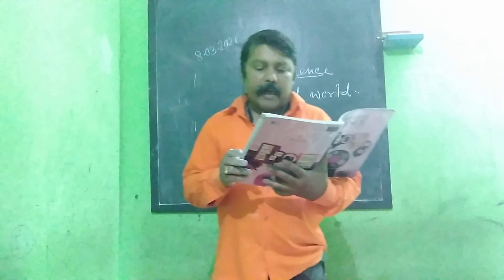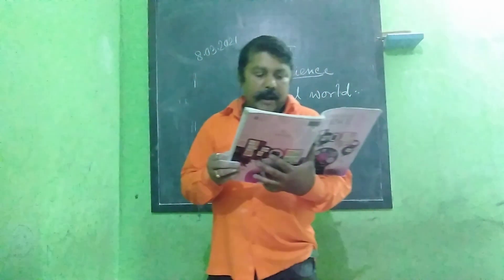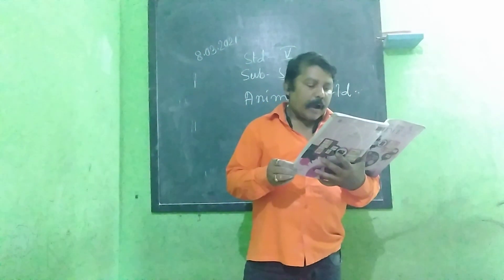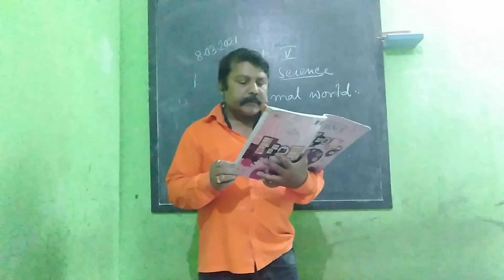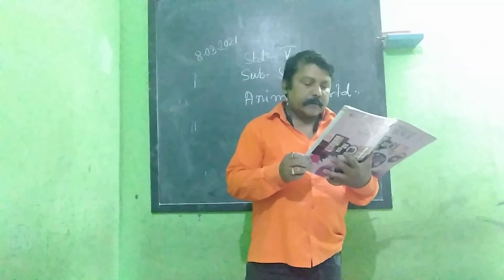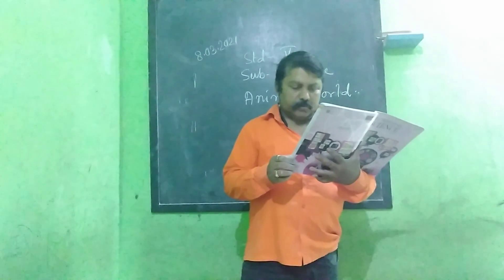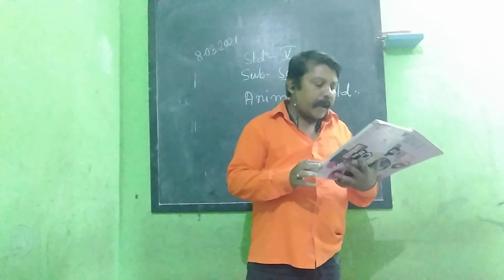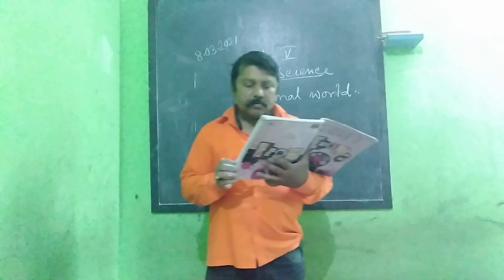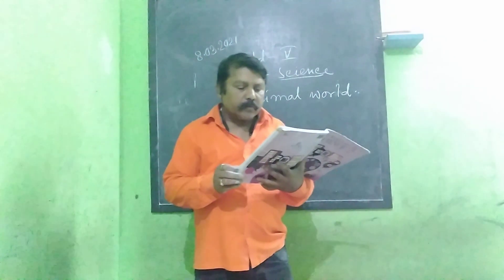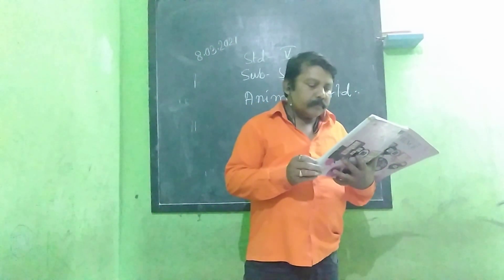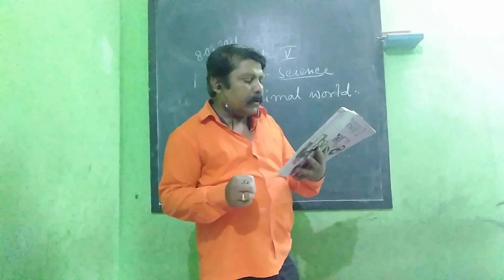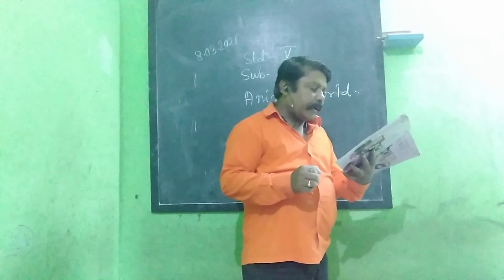Let us learn about the types of habitat. Animals live in the wild. Forests are areas with a lot of trees. In rainforests, the tree cover is so thick that very little sunlight reaches the ground. Monkeys and arboreal animals, or tree dwellers, live here.